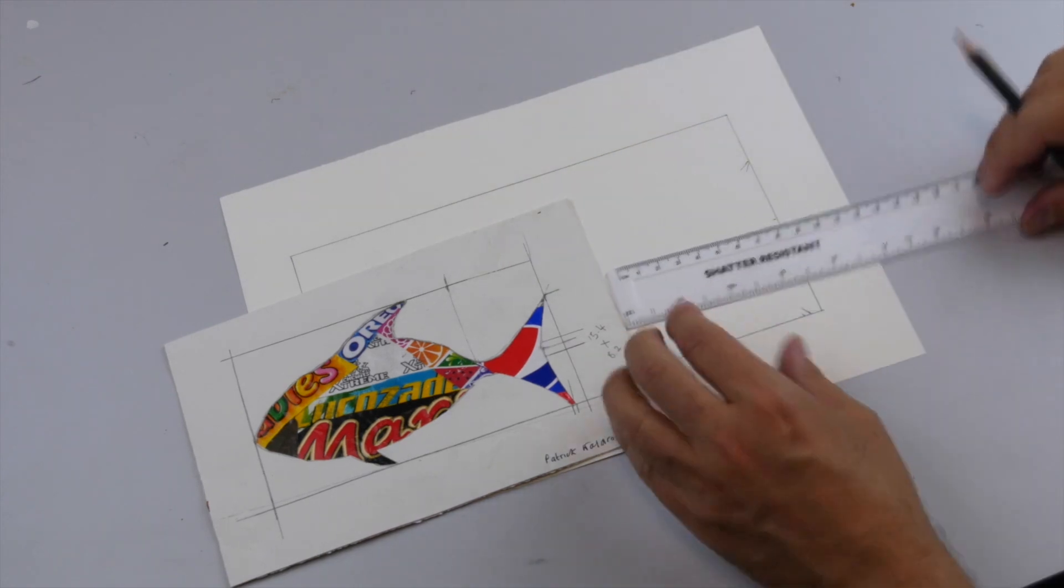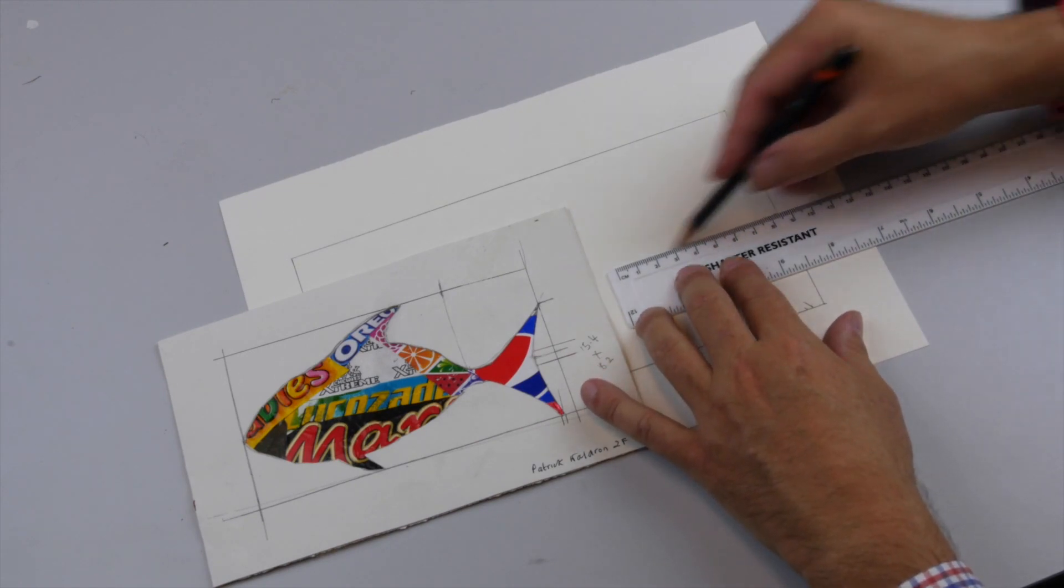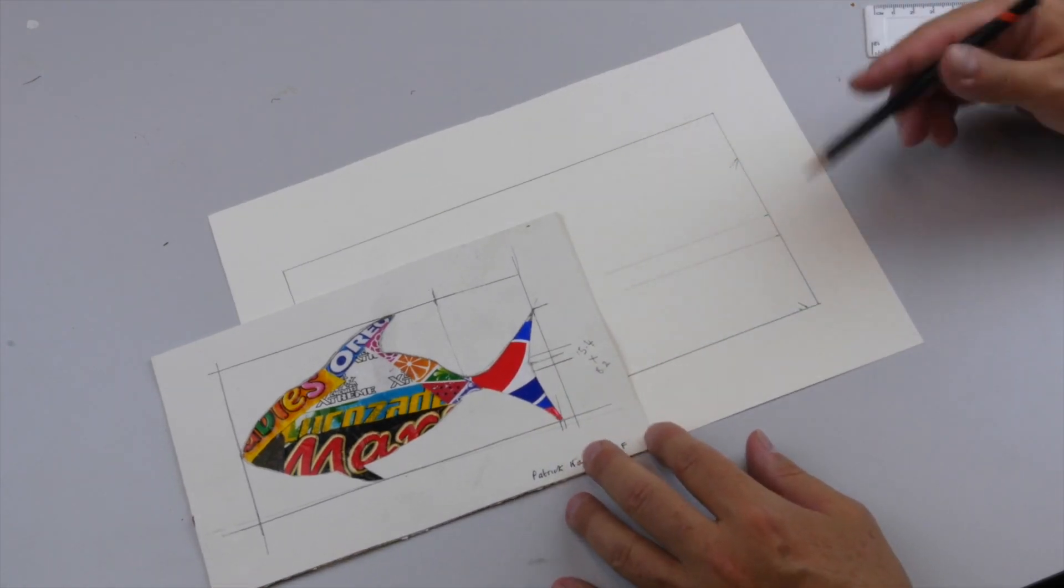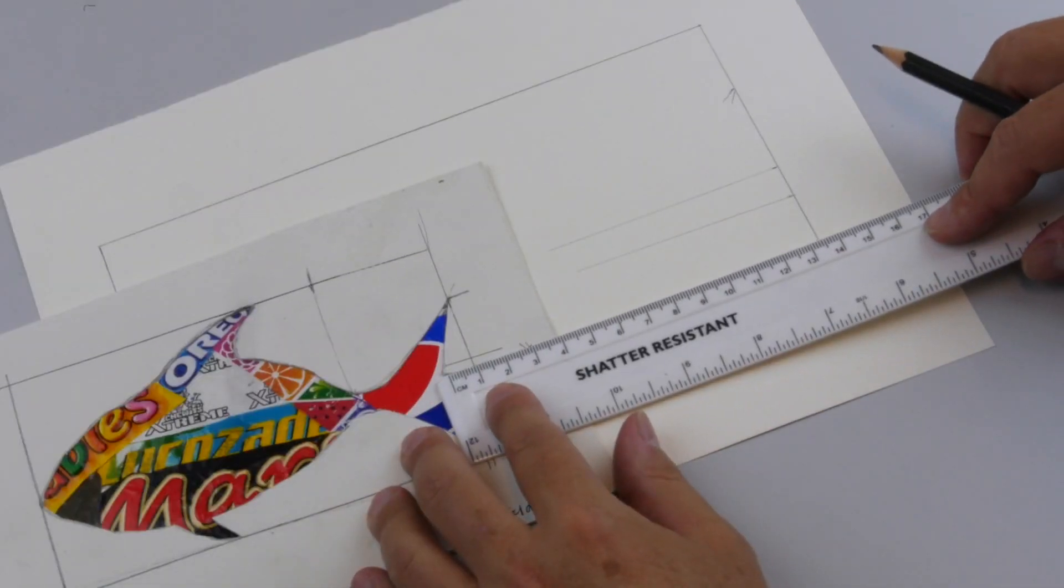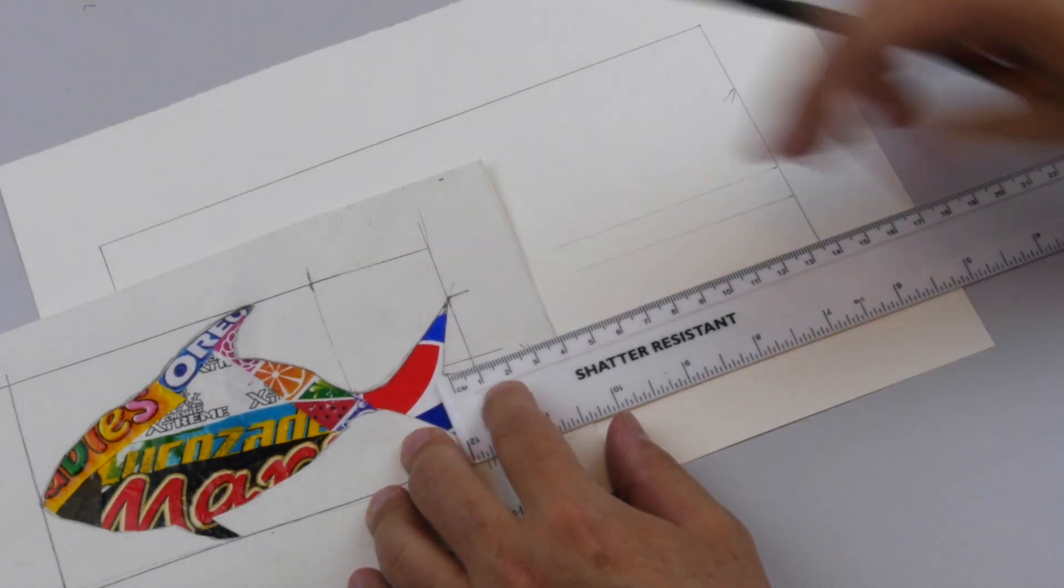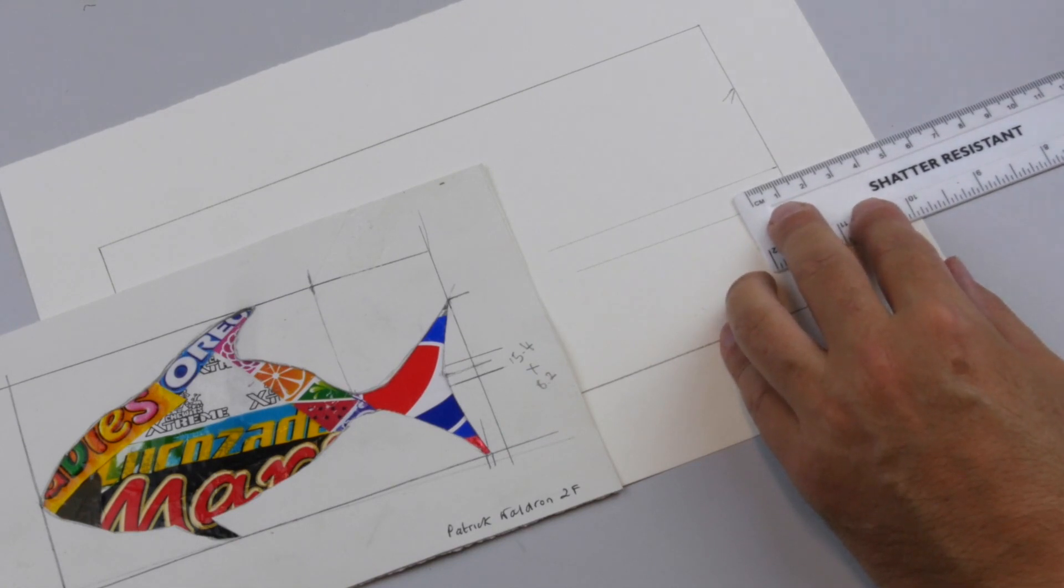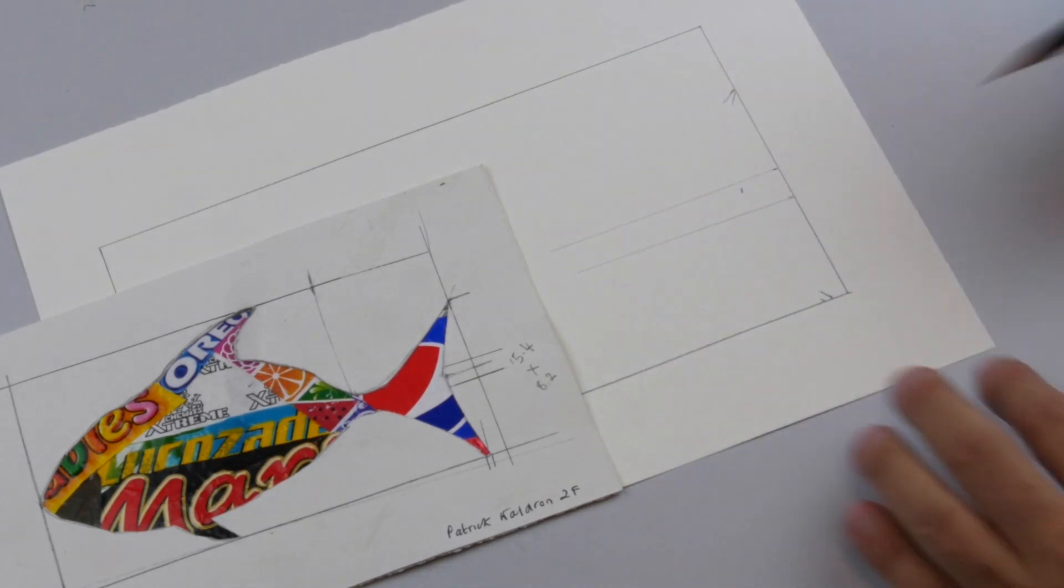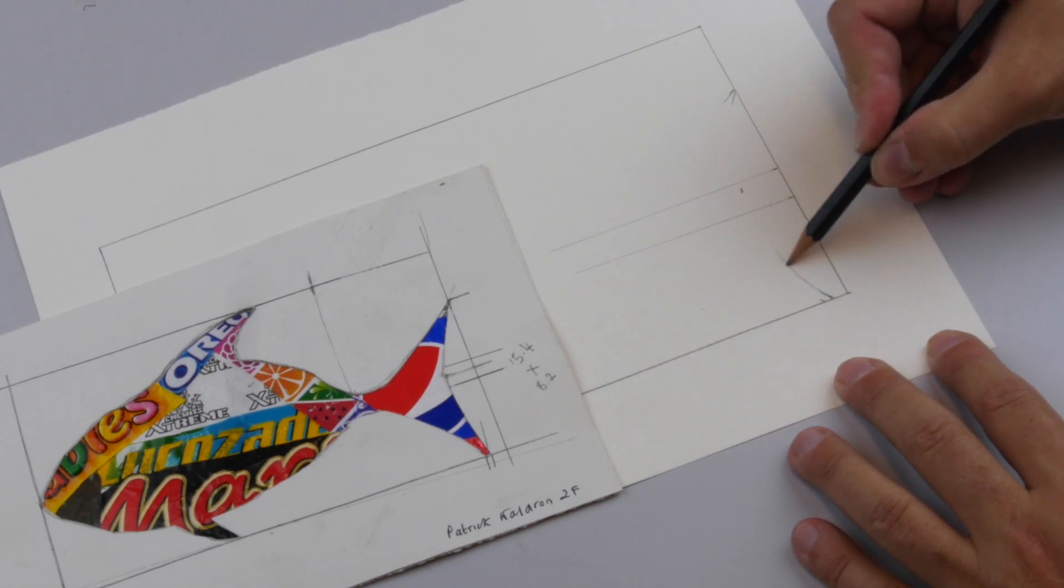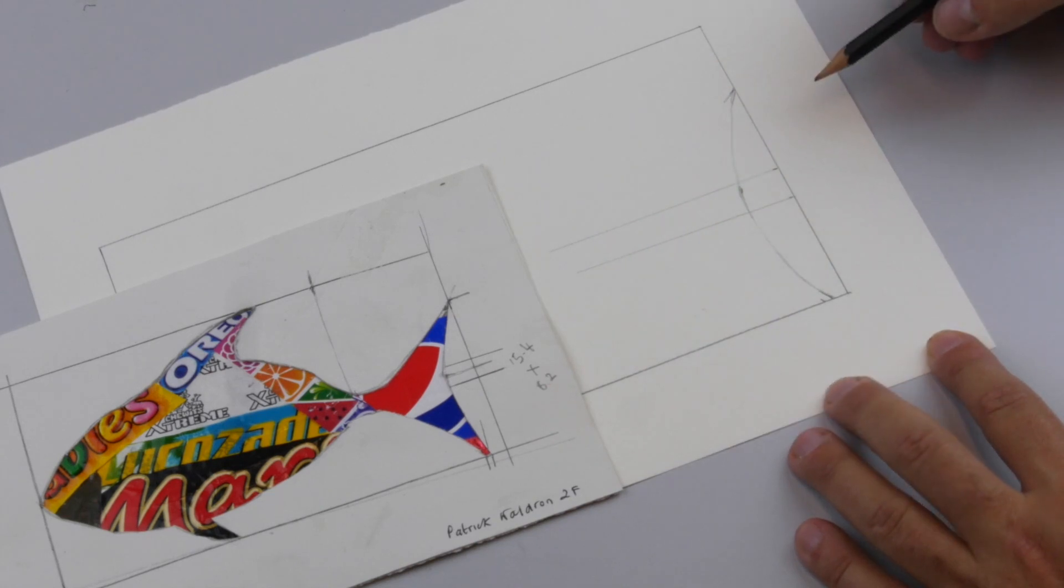One thing I might want to do is measure how far this goes in. That goes in one centimeter from there to there, so on here it's going to go in 1.5 centimeters. So I know that if this lines up to there and lines up to there, that's going to be accurate.